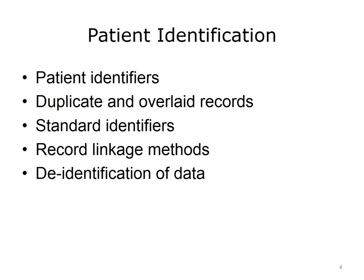In the previous lecture of this unit, we talked about patient identifiers, duplicate and overlaid records, standard identifiers, and record linkage methods. In this lecture, we'll discuss the value and limitations of the de-identification of data.